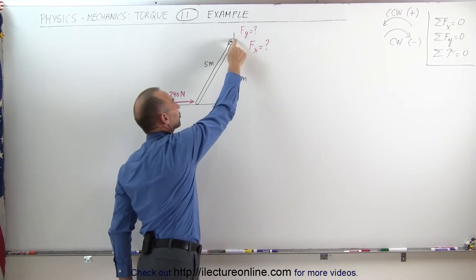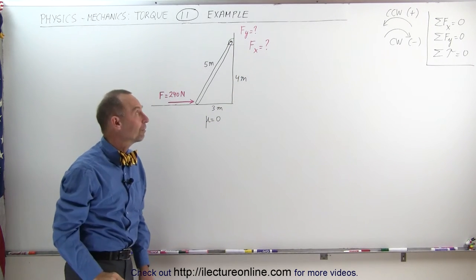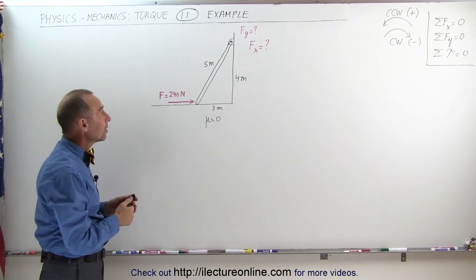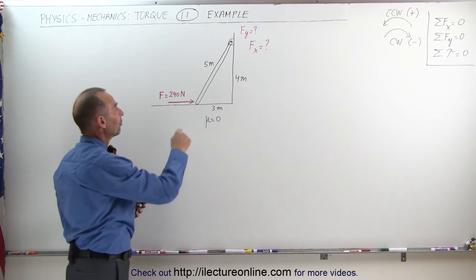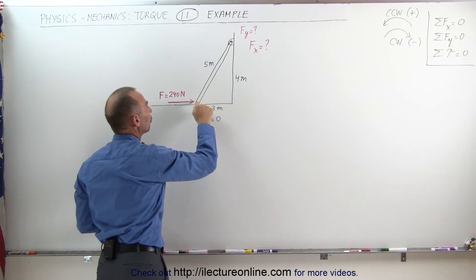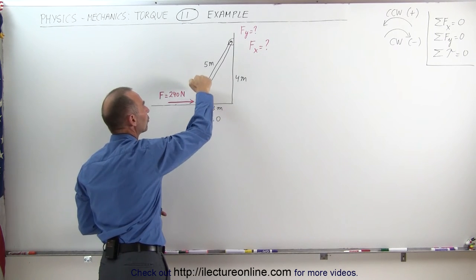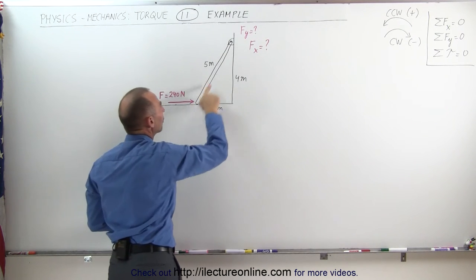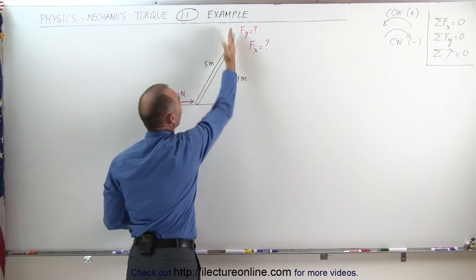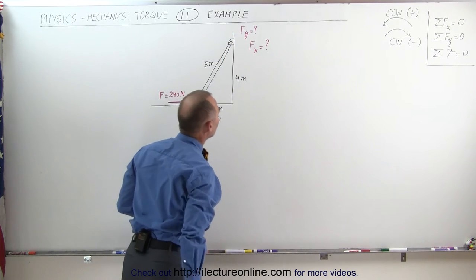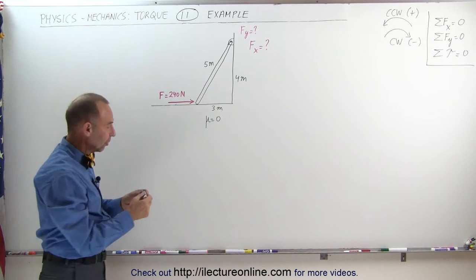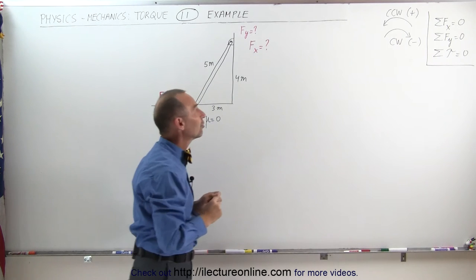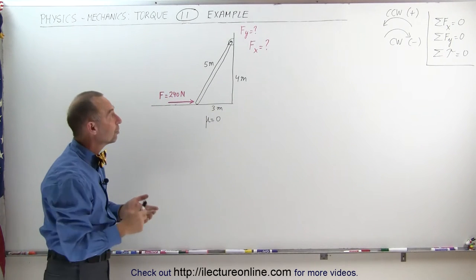What are the reactionary forces at the hinge where the beam is allowed to swivel? There are different methodologies. We know that in all cases the sum of the forces in the x direction will add up to zero, the sum of the forces in the y direction will add up to zero, and the sum of the torques will add up to zero as well.